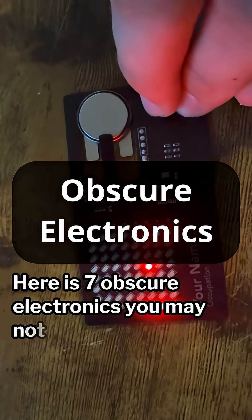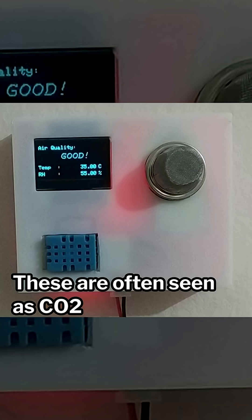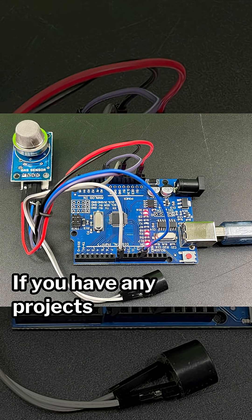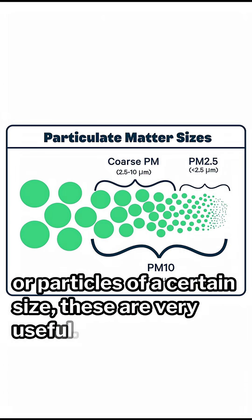Here are seven obscure electronics you may not know. Number one: gas and particle sensors. These are often seen as CO2 or small particle sensors. If you have any projects where you'd like to detect harmful gases or particles of a certain size, these are very useful.